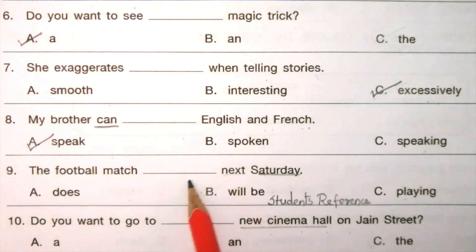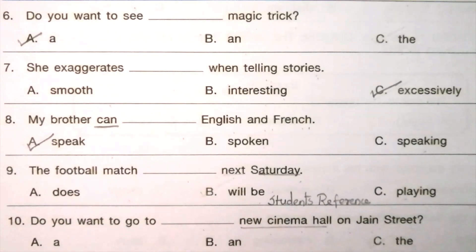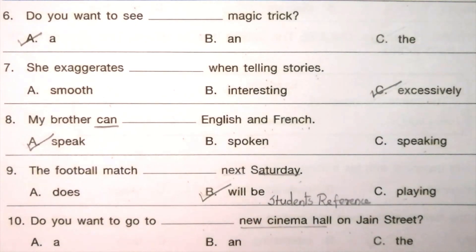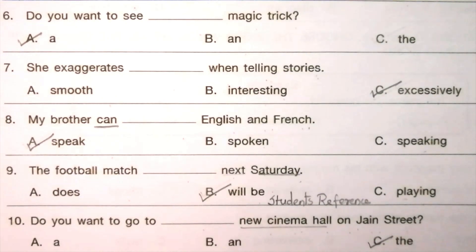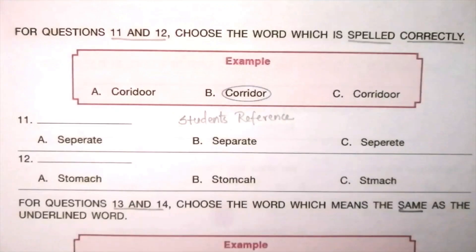Question 9: The football match ___ next Saturday. Options: does, will be, playing. The answer is B: will be. The football match will be next Saturday. Question 10: Do you want to go to ___ new cinema hall on Jane Street? Options: a, an, the. The answer is C: the. Do you want to go to the new cinema hall on Jane Street? For questions 11 and 12, choose the word which is spelled correctly.